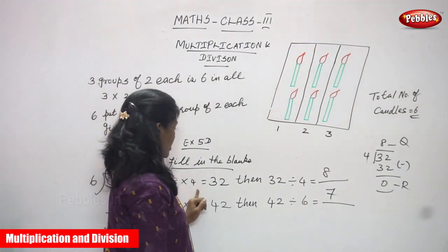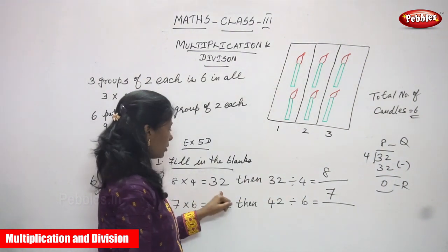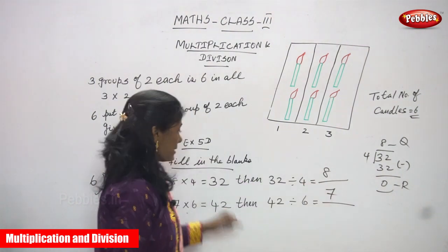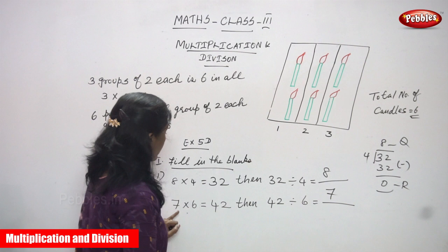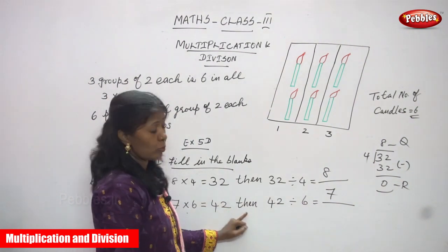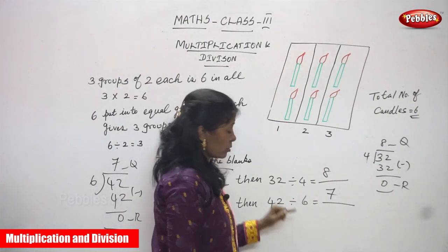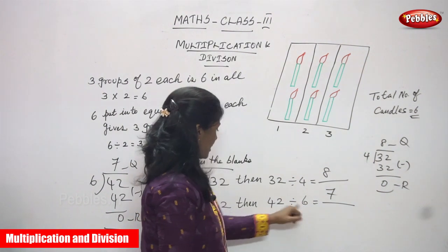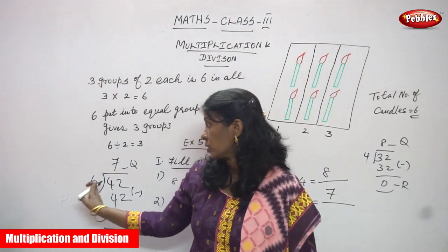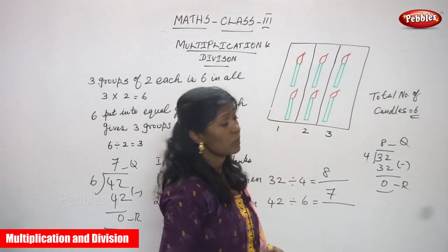To summarize: first question — eight into four is thirty-two, then thirty-two divided by four gives eight. Second question — seven into six is forty-two, as given by multiplication. Then forty-two divided by six gives seven, confirmed by the check method. I think you understand the concept well.